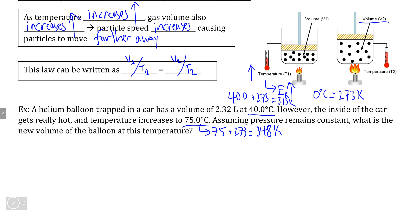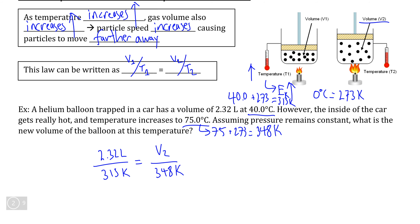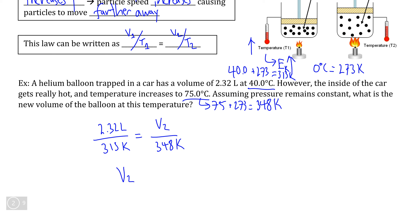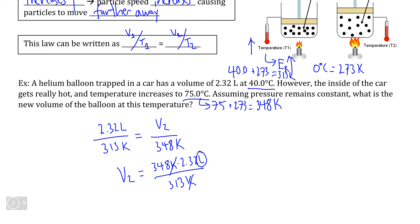We can now use Charles's Law to determine the unknown volume of a balloon when we change the temperature of the gas within it. V1 is 2.32 liters at T1 of 313 K, and this proportion equals V2 divided by T2 of 348 K. To isolate V2, we multiply both sides by 348 K, giving V2 = (348 K × 2.32 L) / 313 K. The Kelvin units cancel, leaving us with liters.